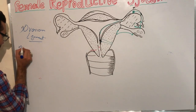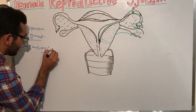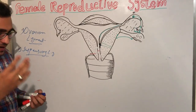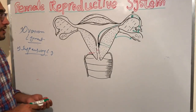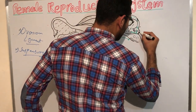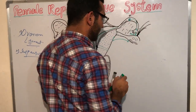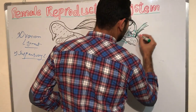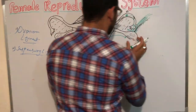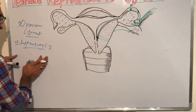The second one is the suspensory ligament. The second name of the suspensory ligament is also the infundibulopelvic ligament, because this ligament causes the suspension of the ovary — a suspension-like structure from the ovary to the lateral wall of the pelvis.